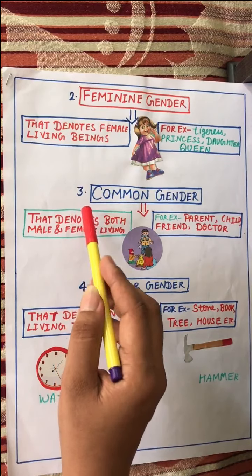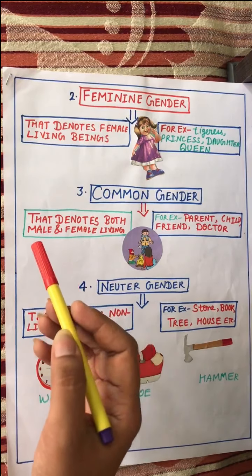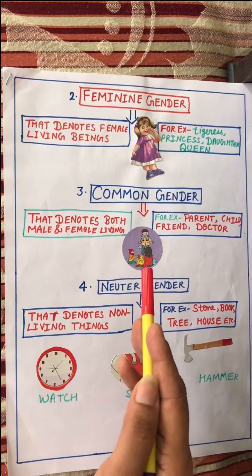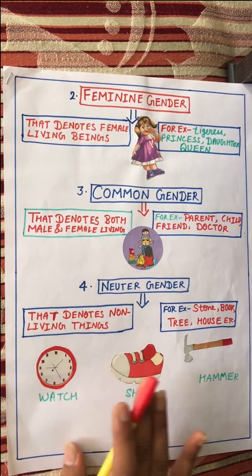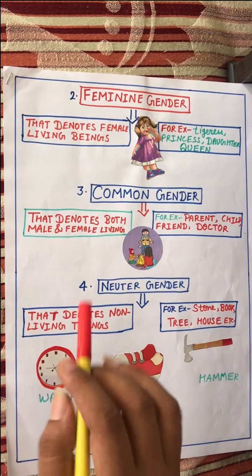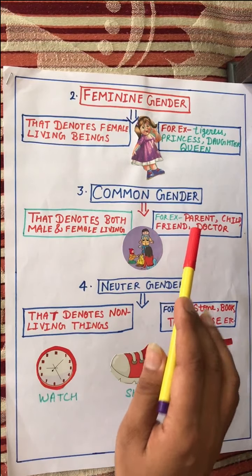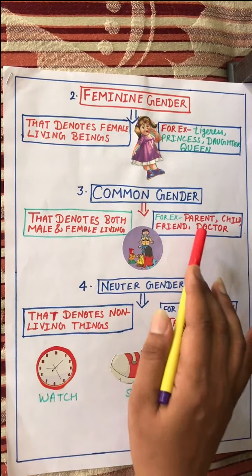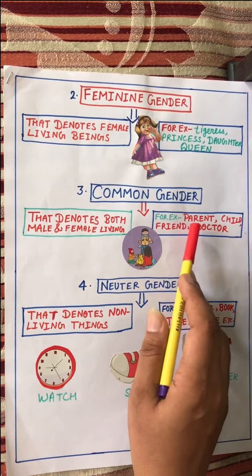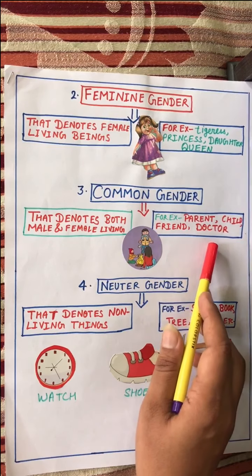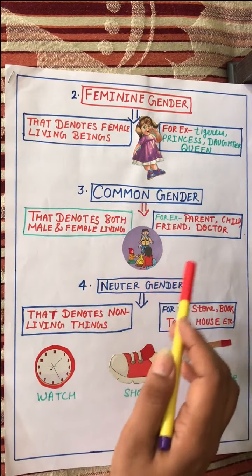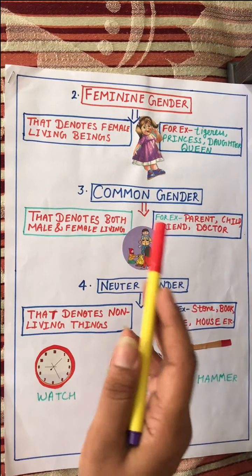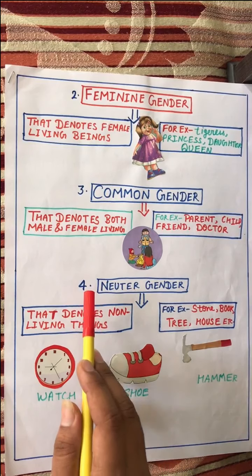The third type of gender is common gender. The noun that denotes both male and female living beings is called common gender. Jo jis mein male bhi ho aur female bhi ho, woh common gender hoga. For example: parent, child, friend, doctor. In 'parent,' both mother and father are included; in 'child,' both boy and girl come; in 'friend' and 'doctor,' both male and female apply. So common gender is where both male and female are included.